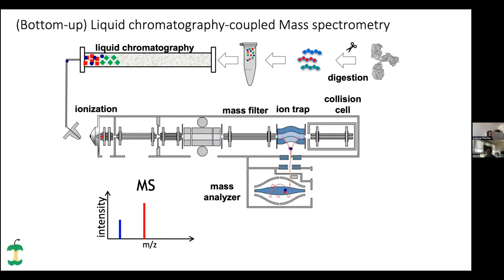The problem is that those mass spectrometry experimental setups can be very complex. People add new types of mass spectrometers, new types of experiments, invent new labeling strategies, and different ways to compare samples. Here I give a little overview of the most common strategies in quantitative proteomics and highlight which of them are supported by QuantMS.